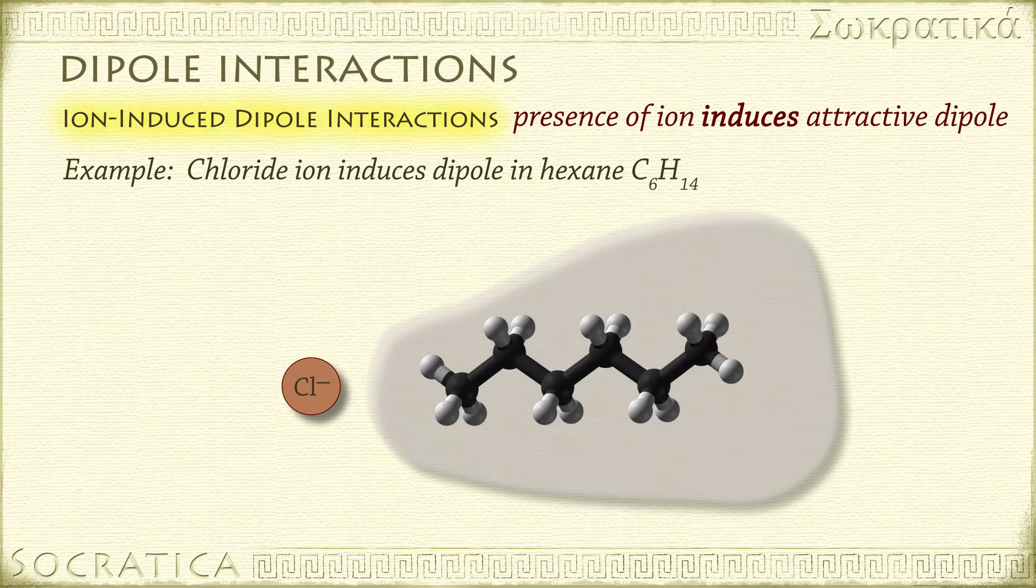It pushes the electrons away, just a little. As a result, there is a slight partial positive charge on this side of the hexane, which is then attracted to the negatively charged ion.